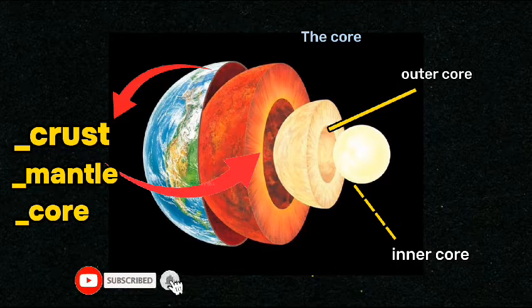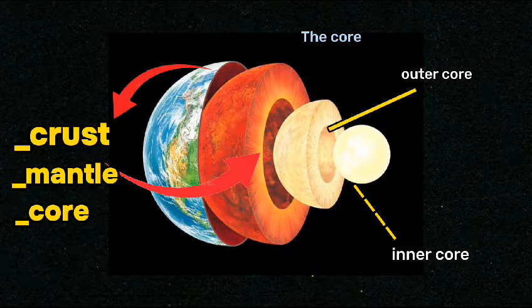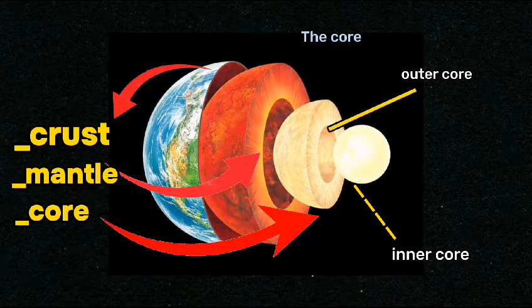Mantle is the middle layer which is made of solid and molten rock. Its thickness is around 1800 miles. The outer core is liquid while the inner core is solid.